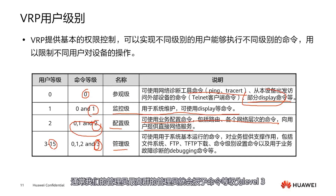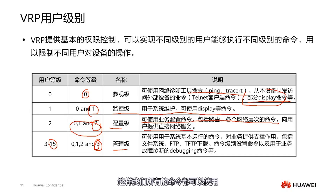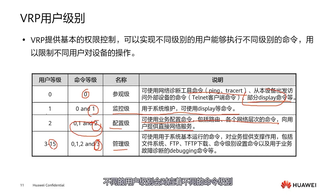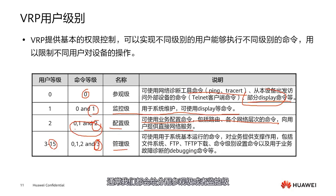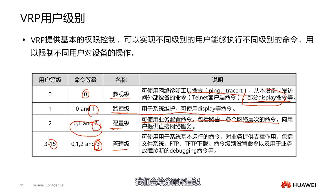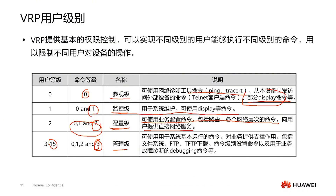Usually our administrators with the highest authority are granted command level 3, so all commands can be used. Different user levels correspond to different command levels. If it's monitoring personnel, we assign visitor or monitoring level. If monitoring personnel need to perform some operations, we assign configuration level. But for maintenance and management personnel, we need level 3, the management level. These are the different levels assigned to different users.